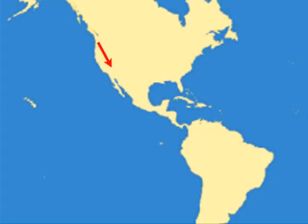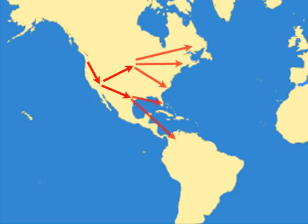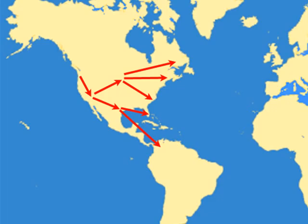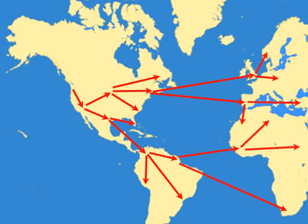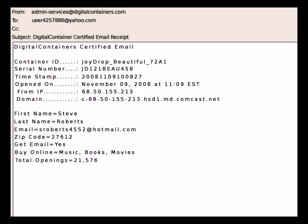In this manner, containers travel around the world as they are passed from user to user. At each stop, they gather information about the new customer, including shopping preferences, IP address, and geographic location. This valuable information is collected at a central point and made available to the publisher. The publisher can even be alerted by email each time a container is opened, or when important milestones such as revenue targets are reached.